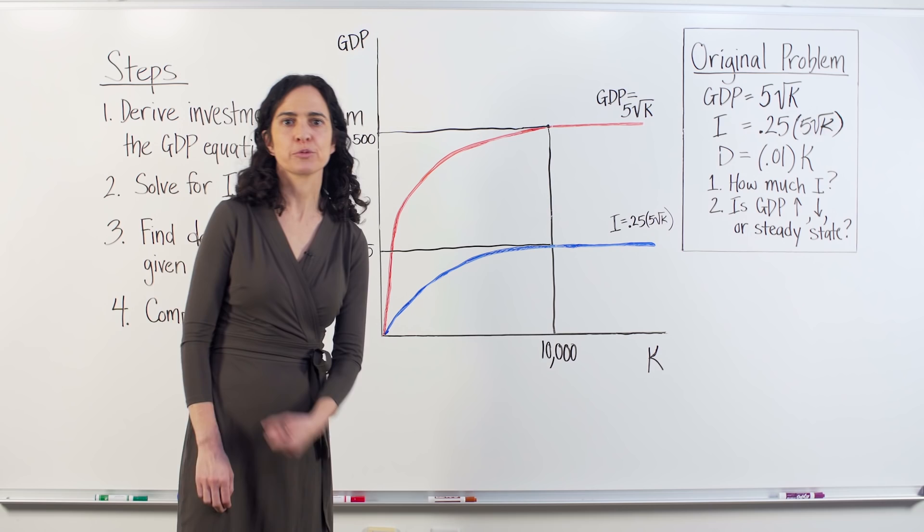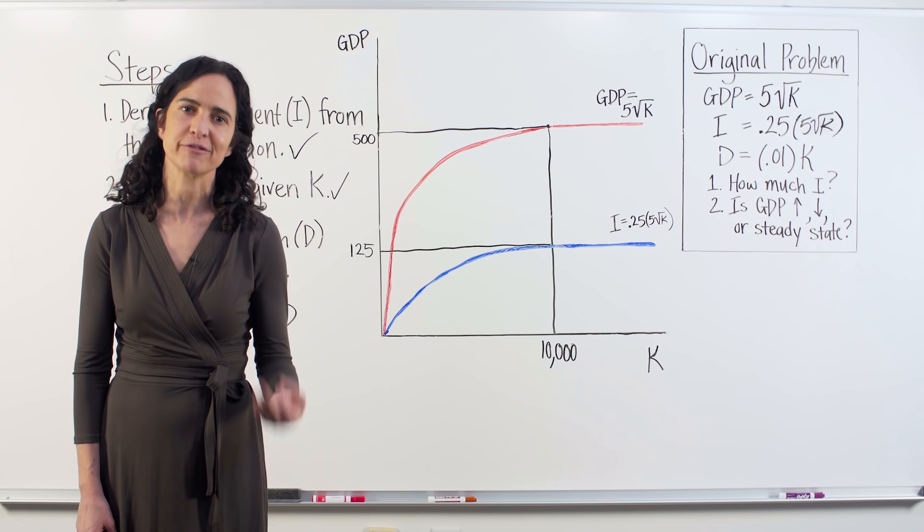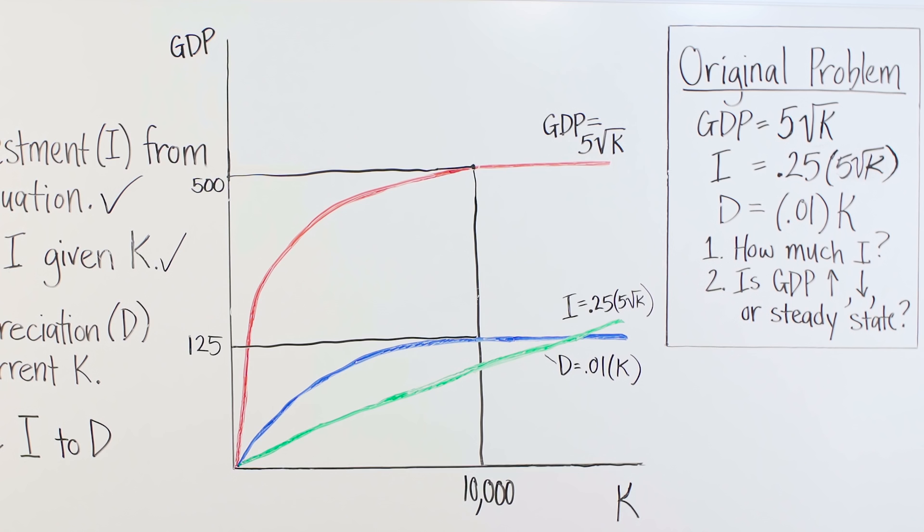It helps to graph depreciation. We know from the initial problem that 1% of all capital stock is depreciating. Graphically, 1% times K can be represented roughly like this. If capital stock is 10,000, 1% of 10,000 is 100. So $100 worth of capital stock is wearing down or depreciating each year. We've now solved for step three.